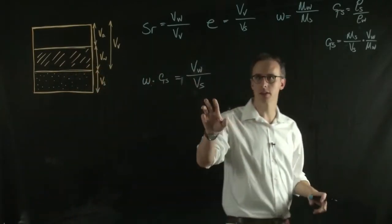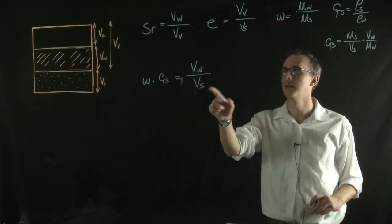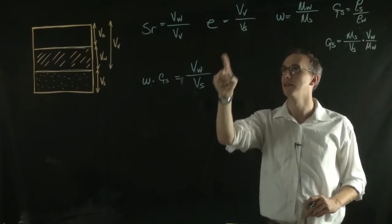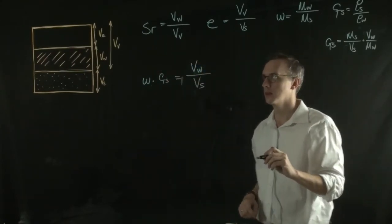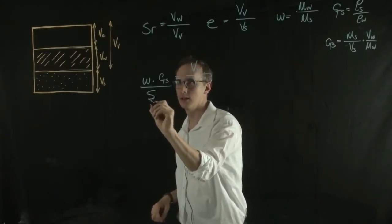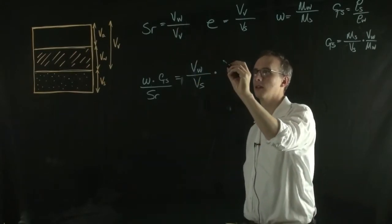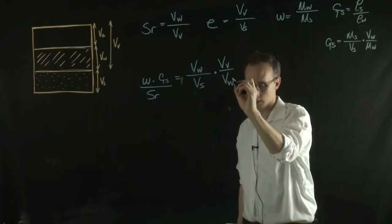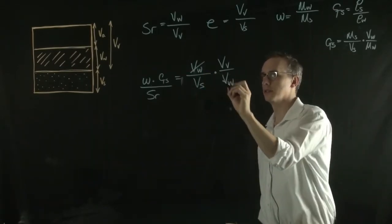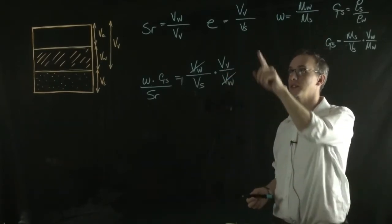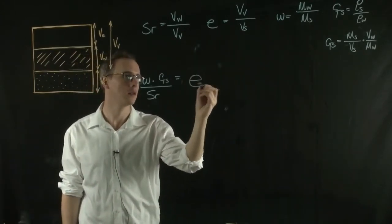We're approaching terms that can be substituted in terms of void ratio — we have the volume of the solid on this side. What we need is the volume of the voids over the volume of the solids. To do that, we divide by the saturation ratio, which means multiplying by the volume of the voids over the volume of the water. The volume of the water cancels, leaving the volume of the voids over the volume of the solid — which is the void ratio.